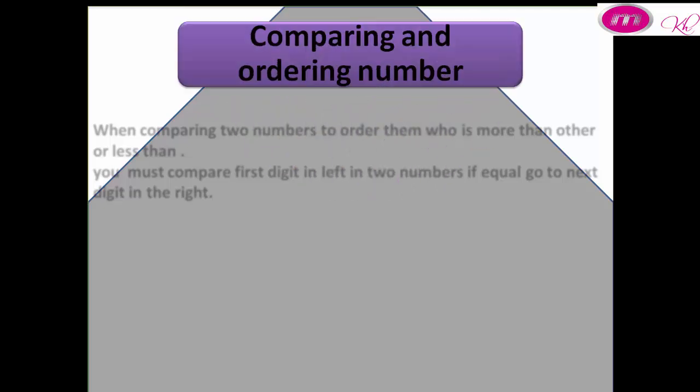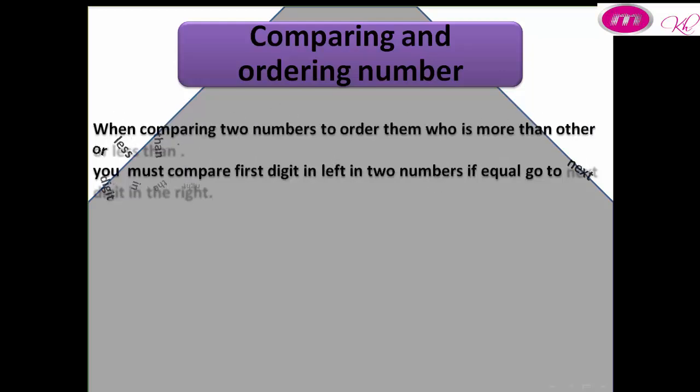Comparing and ordering numbers: when comparing two numbers to order them and see which is more or less than the other, you must compare the first digit on the left in both numbers. If equal, go to the next digit on the right.